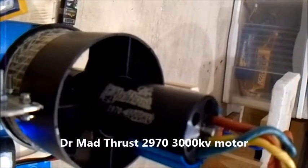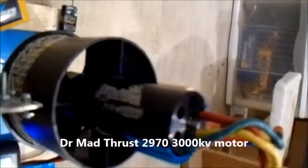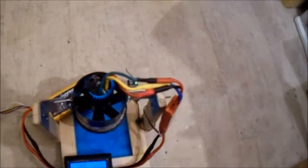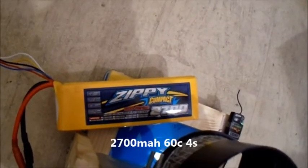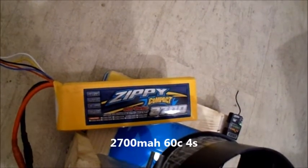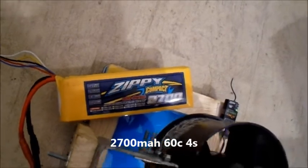What I've got in there is a Dr. Mad Thrust 3000kb 29mm inrunner on the 70mm six-bladed fan. This is a 2700mAh 60C Zippy Compact 4 cell.